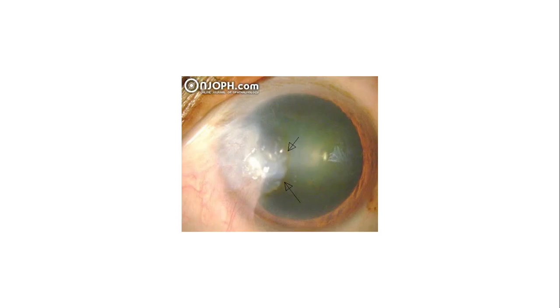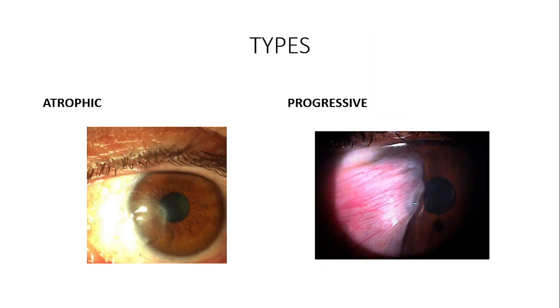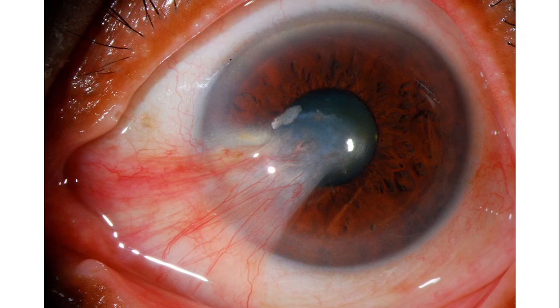Differential diagnoses of pterygium can be divided into benign and malignant lesions. Benign mimics include nodular scleritis, pseudopterygium, and pinguecula. Malignant lesions that may mimic pterygium include squamous cell carcinoma of the limbus.